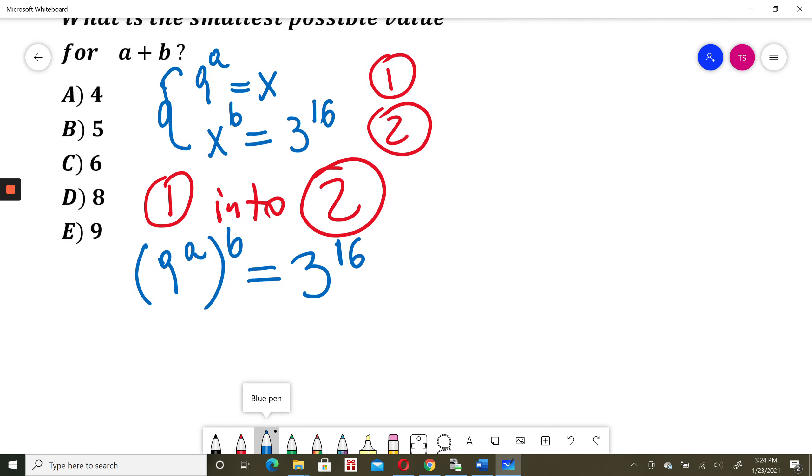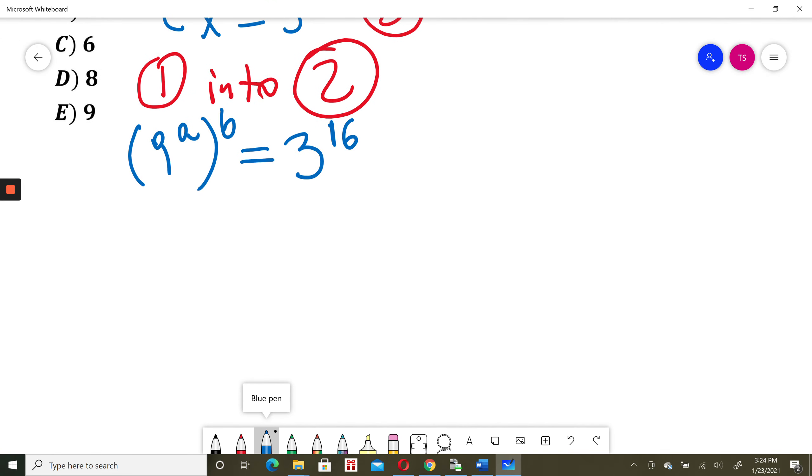At this moment I will use power rule for exponents, so I will multiply exponents. It will be 9 to the power of a times b, this equals 3 to the power of 16.